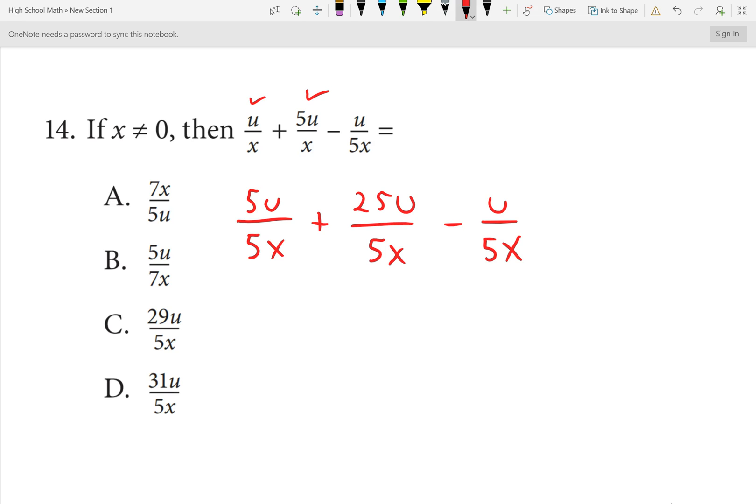Now, since we have the denominators equal, the denominator will stay equal. Combining like terms in the numerator, 5U plus 25U will be 30U minus 1U will be 29U. Number 14 is C.